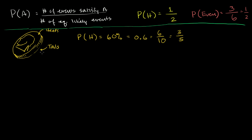There are two possible events — heads or tails — but they're not equally likely anymore. We really can't do this counting of events that satisfy something over all possible events. In this situation, to visualize the probability, we have to take what's called a frequentist approach. The way to conceptualize a 60% chance of getting heads is: if we had a super large number of trials and flipped this coin a gazillion times, we would expect 60% of those to come up heads.